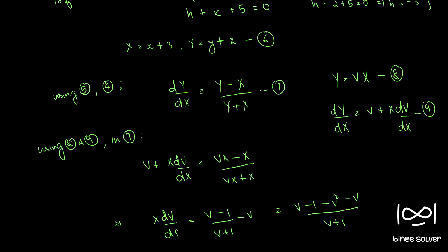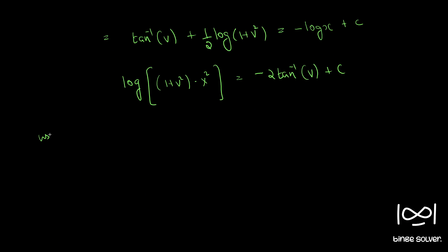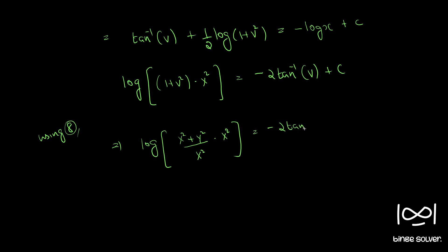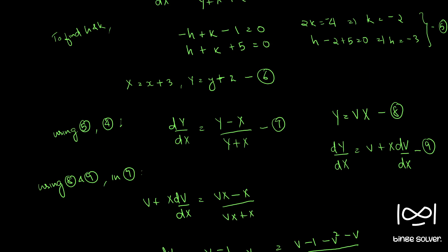Now, from equation 8 we have v equal to Y by X. Substituting that in, we get log(1 plus Y squared by X squared) times X squared — the X squared terms cancel — giving log(X squared plus Y squared) equal to minus 2 tan inverse (Y by X) plus c.